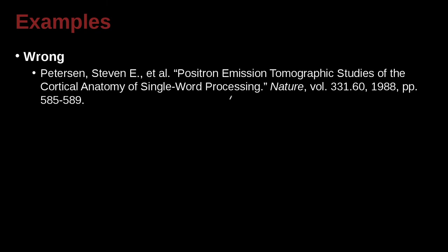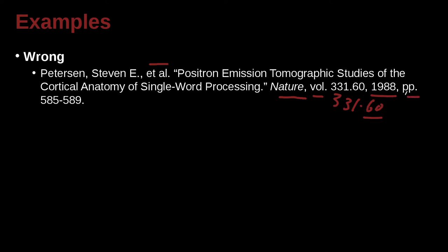So that's pretty straightforward — just don't confuse this with other style approaches, such as APA. Next example: Peterson, Steven E., et al. — meaning we must have three or more authors, so we use et al. The paper is 'Positron Emission Tomographic Studies of the Cortical Anatomy of Single-Word Processing,' in the journal Nature. The volume number is 331, and here we have 331.60 — I think the .60 would be the issue number — along with the date and the pages.